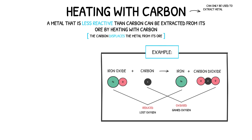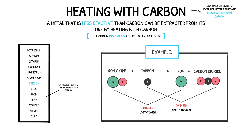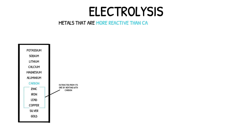Unfortunately, this method of extraction can only be used for metals that are less reactive than carbon. For metals above carbon in the reactivity series — those more reactive than carbon — an alternative method must be used. Metals that are more reactive than carbon are extracted from their ores via electrolysis. The ore is heated until molten, where it splits into its respective ions.